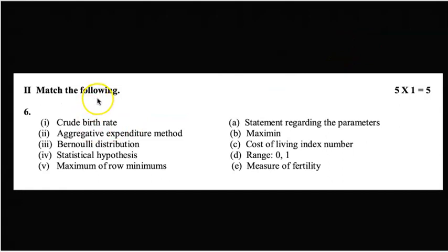The second mean is match the following. We have 5 × 1 = 5 marks allocated. The sixth question is the crude birth rate, then aggregative expenditure method, Bernoulli distribution, statistical hypothesis, and a maximum of row minimums. On the right hand side we have: statement regarding the parameters, maximum cost of living index number, range is 0,1, and measure of fertility.